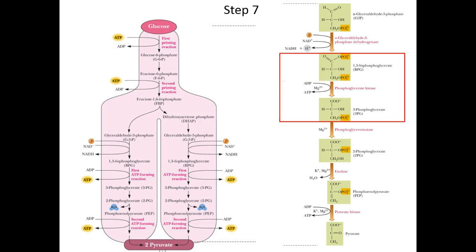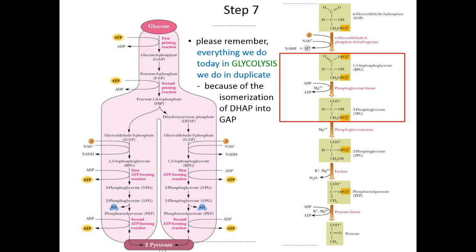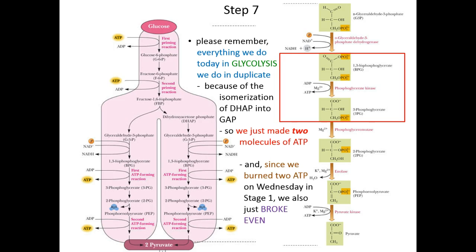So here is step 7: 1,3-BPG converted to 3-PG, and ATP is made alongside. Remember, everything we're doing in this phase of glycolysis we are doing in duplicate because we have two molecules of GAP that we started with. So we didn't just make one ATP — we just made two — which means this is our break-even step. The two ATPs we burned in steps 1 and 3 of glycolysis, we just broke even because we made two ATPs here.